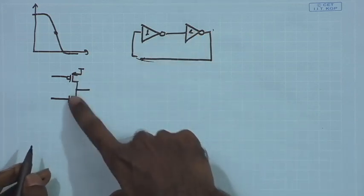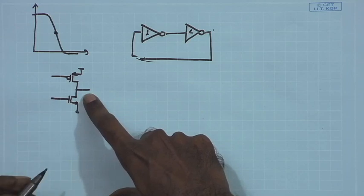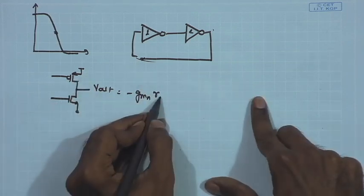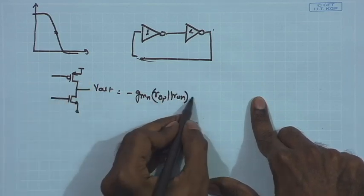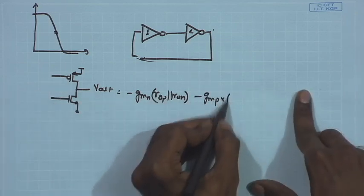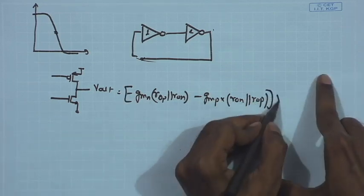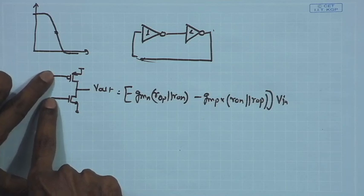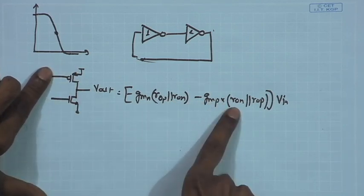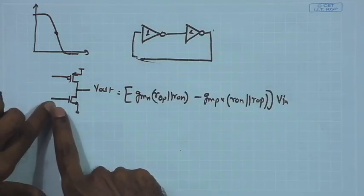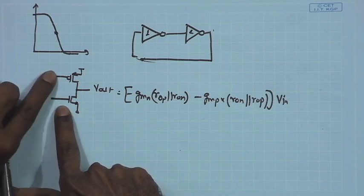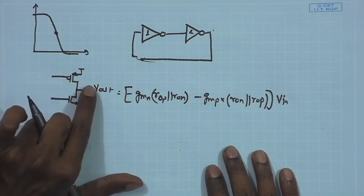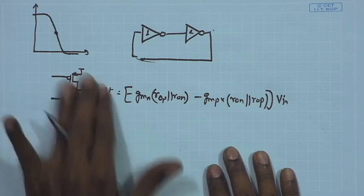Taking superposition: due to the pMOS gate signal, the output contribution is −gmp·(ron ∥ rop)·Vin; due to the nMOS gate signal it is −gmn·(ron ∥ rop)·Vin. Both give inversion and both add together, yielding a total gain of −(gmn + gmp)·(ron ∥ rop). This confirms that the back-to-back inverter pair acts as an amplifier, provided both transistors are biased in the high-gain region.